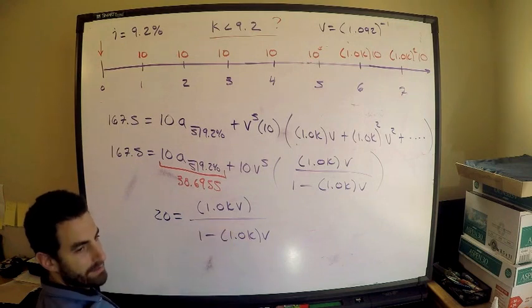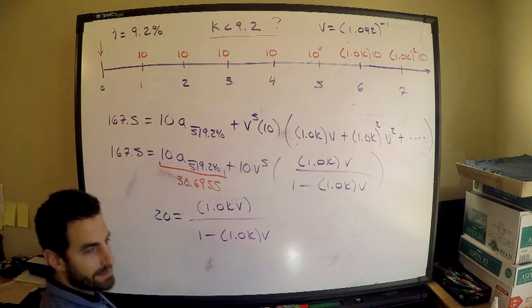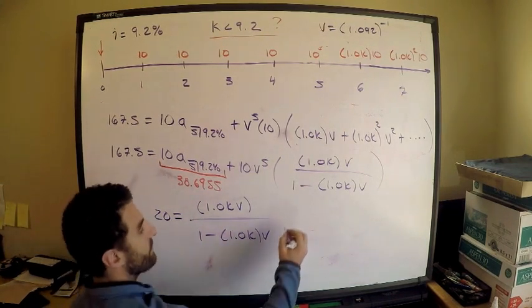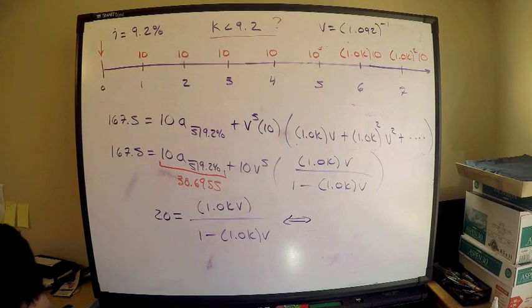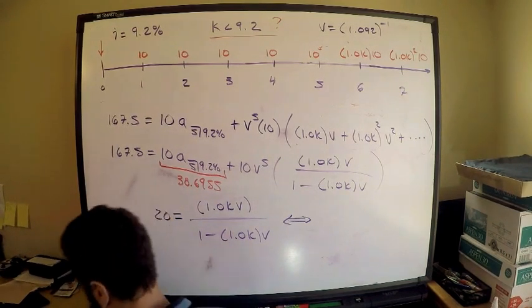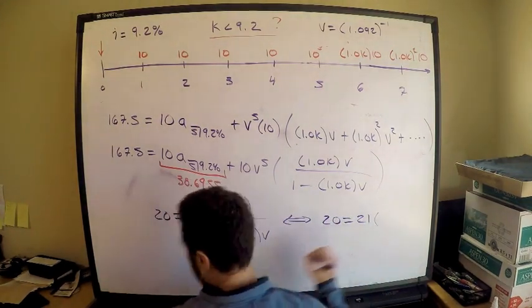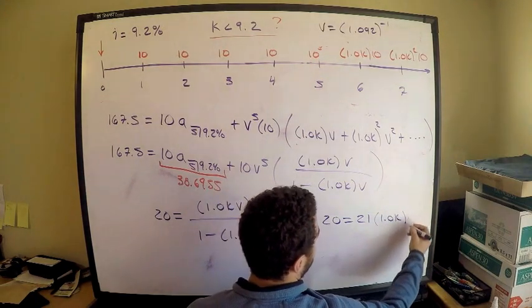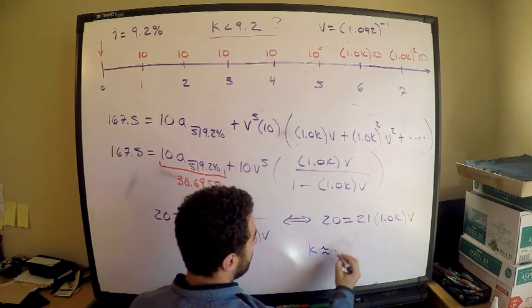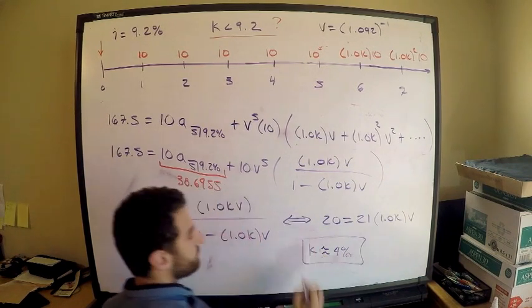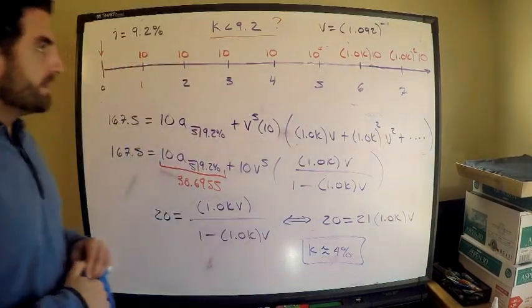We need to get K by itself, multiply both sides by the denominator, bring every term with K to one side, divide by the rest. Solving this, you should get 20 equals 21 times 1.0KV, which tells you that K is about 4%. That's my answer.